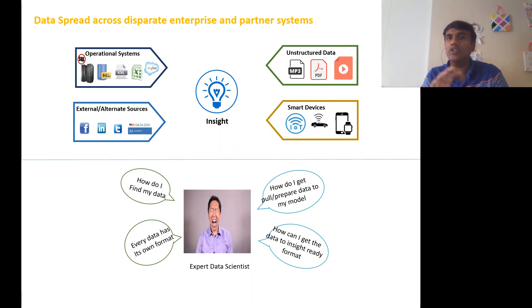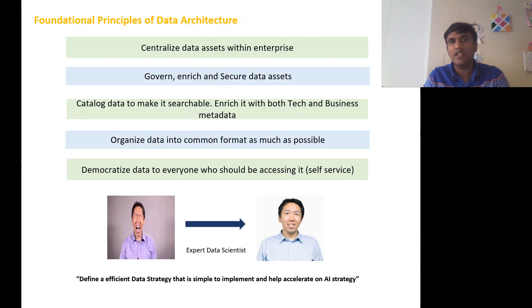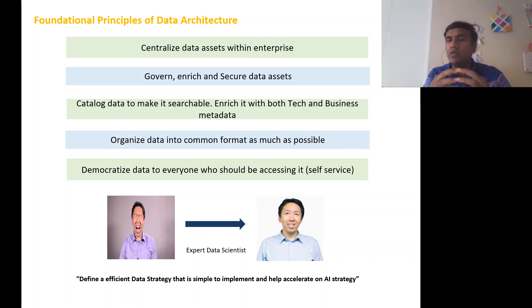Finally, what a model understands is numerical input. So how can I convert these multiple data formats, collect them, and generate a model-ready file that my model can act on? This is a pretty big challenge in any enterprise today. One of the key foundations of data architecture is centralizing data assets within the enterprise — taking all the data and centralizing it in a uniform format that a data scientist can consume.